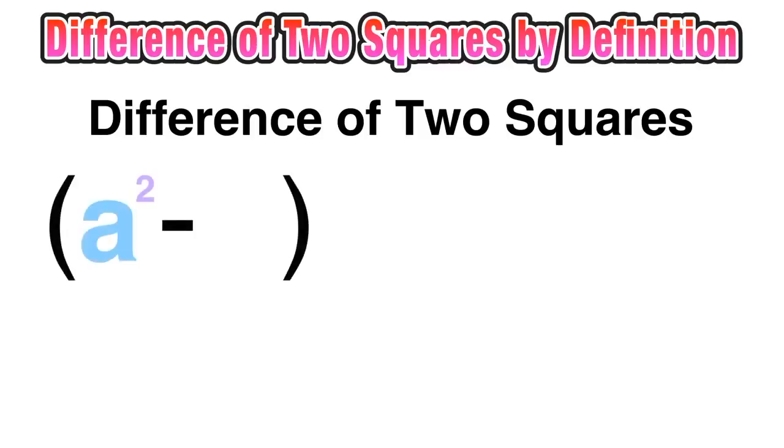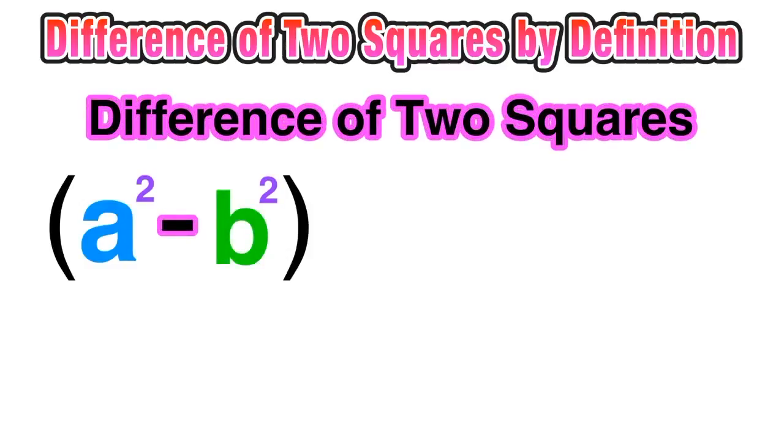First of all, be aware that this strategy only applies in situations when both terms, whether they be values or variables, are perfect squares and when the sign in between them is a minus sign, when it is subtraction, hence the word difference.